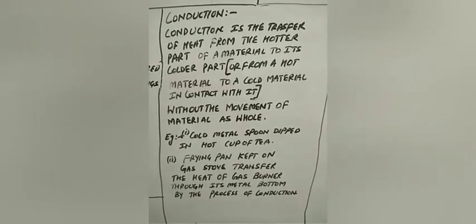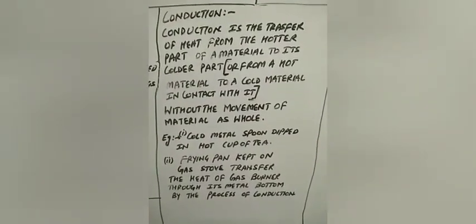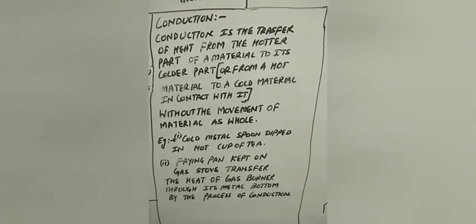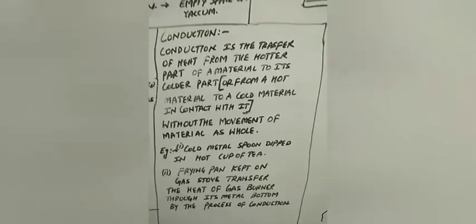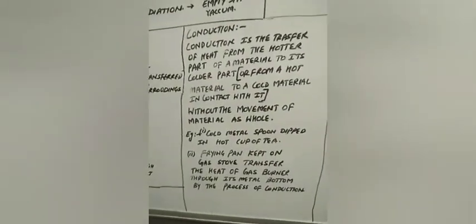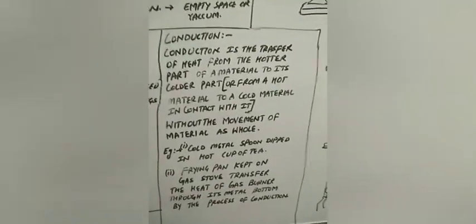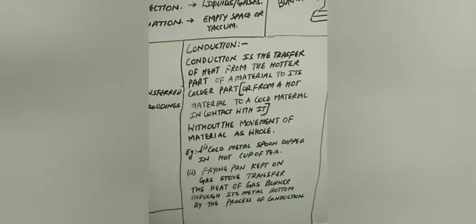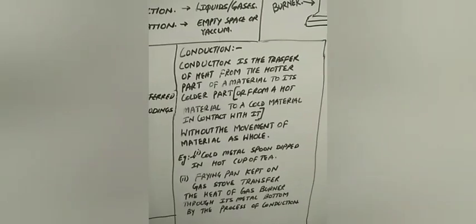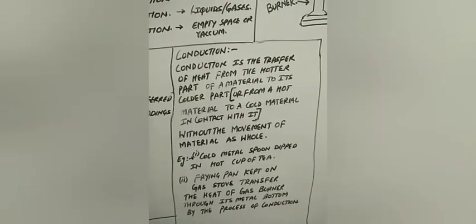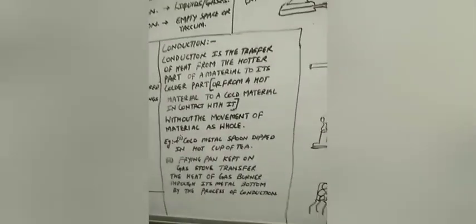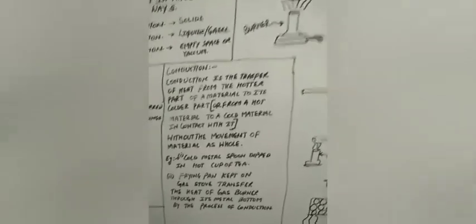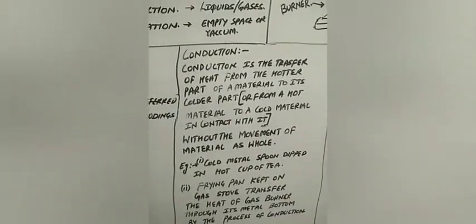For example: a frying pan kept on a gas burner transfers the heat of the gas burner through its metal bottom by the process of conduction. When you heat a cooker from the bottom on the gas, ultimately its handle also becomes hot — that happens with the help of conduction. When particles gain energy, their kinetic energy increases; every atom in a solid vibrates. When an object gains heat, particles start vibrating more and transfer heat further.